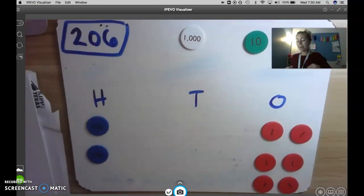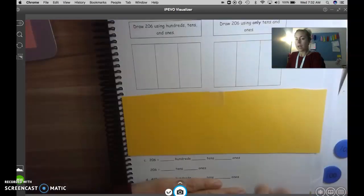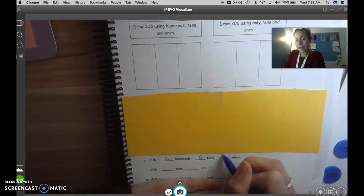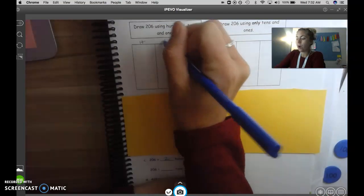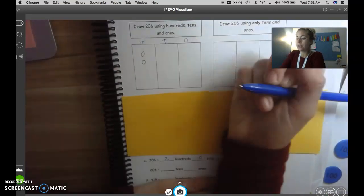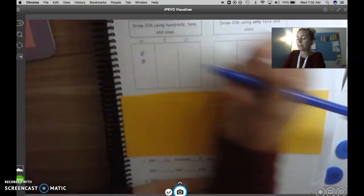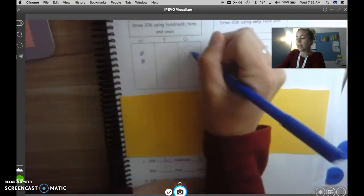So then on my paper I would write two hundreds, zero tens, and six ones. And then on my place value chart here I would draw two hundreds just like this, zero tens, and six ones.